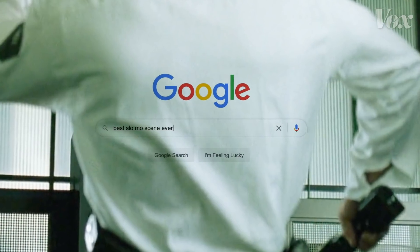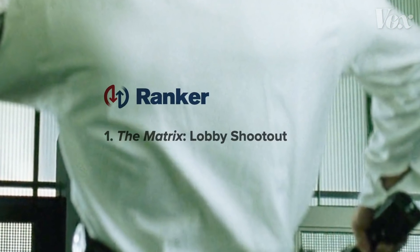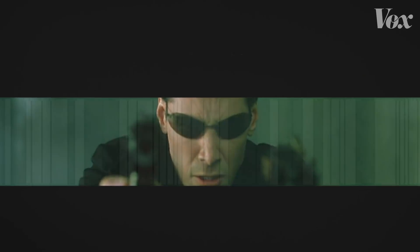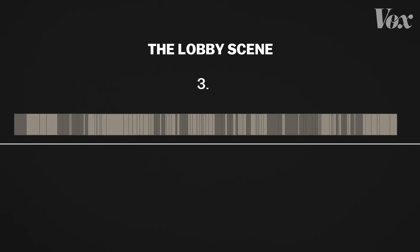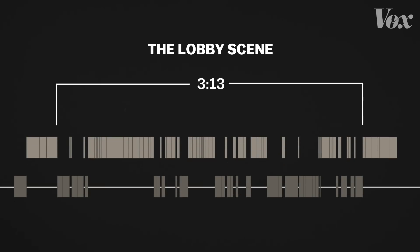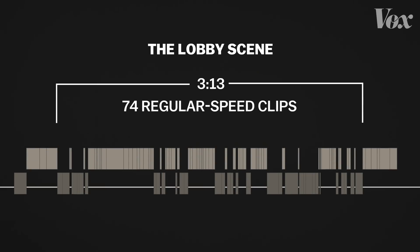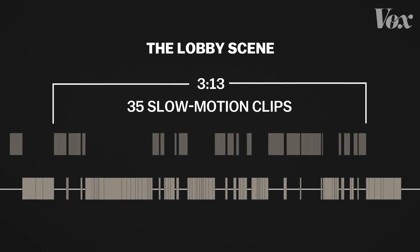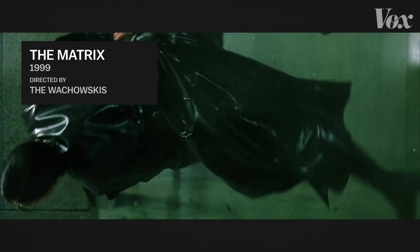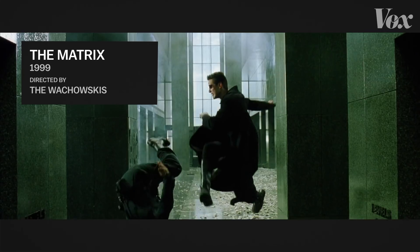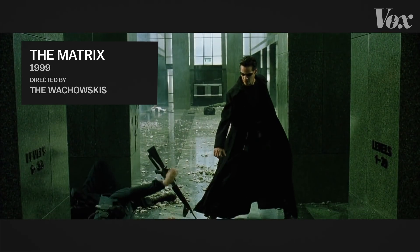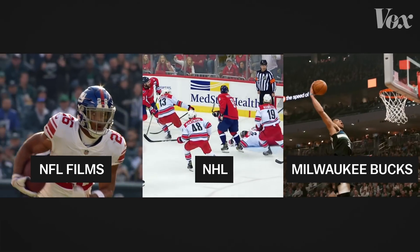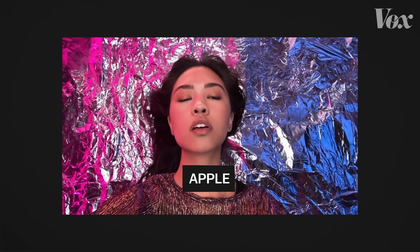If you Google 'best slow-mo scene ever,' you'll find the Matrix lobby scene over and over again. It is actually a 3-minute, 13-second tapestry of 74 apparently normal clips and just 35 slow-motion ones. Yet this is what we remember. Slow-motion animates sports and sells iPhones and is so powerful in movies it can make you forget everything else in the scene.